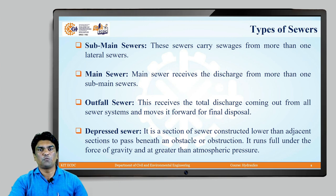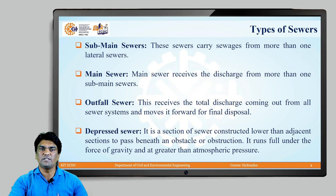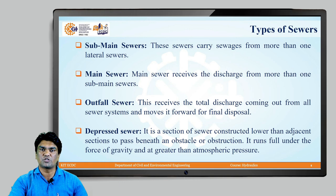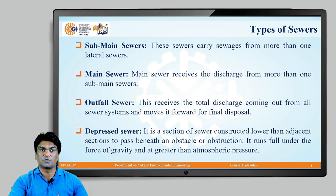Two more types are outfall sewers and depressed sewers. The outfall sewer receives the total discharge coming out from all sewer systems and moves it forward for final disposal. A depressed sewer is used when we come across obstacles or obstructions — it is a section of sewer constructed lower than adjacent sections to pass beneath an obstacle. It runs full under the force of gravity and at greater than atmospheric pressure.